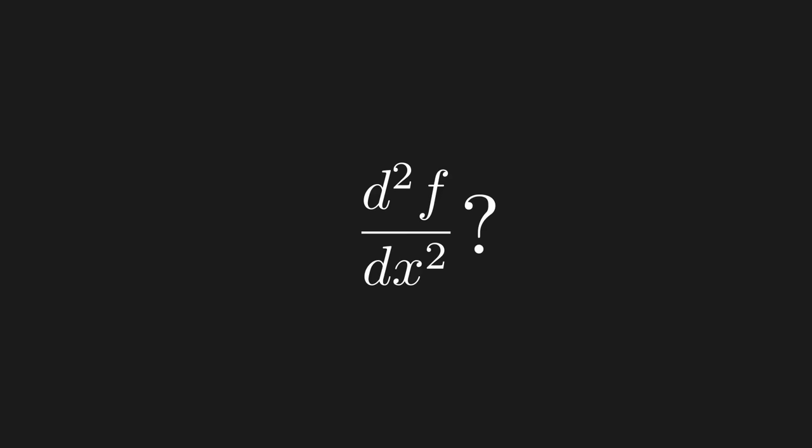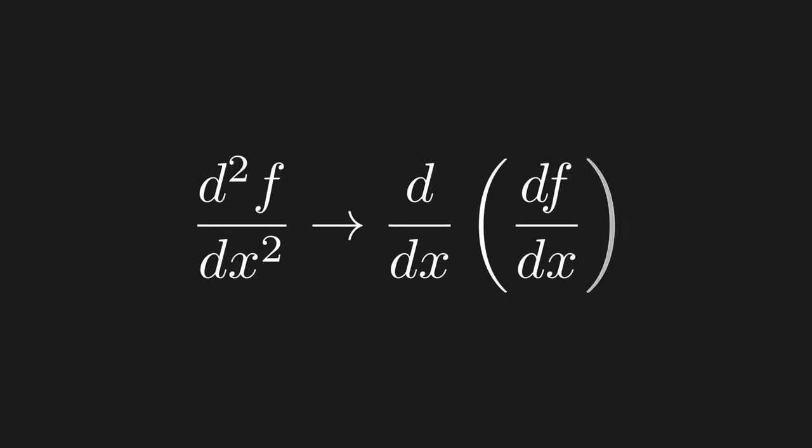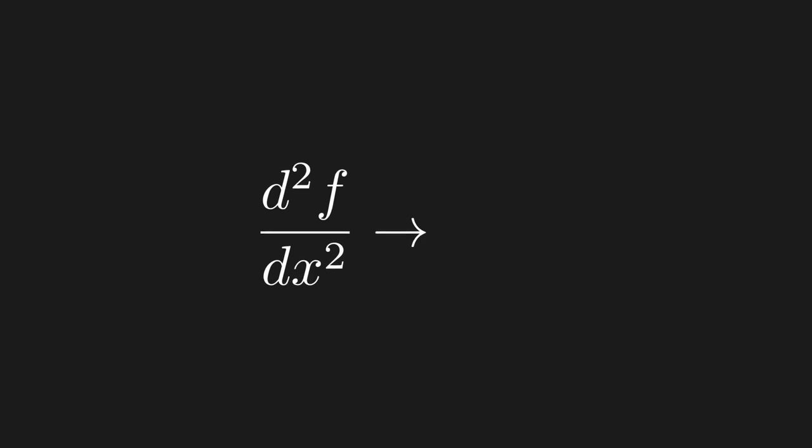So what about the second derivative? What does it tell us? Usually we're taught that it tells us how the first derivative changes when we change the input by a tiny amount — but this understanding kind of sucks. I don't want to know what the second derivative tells me about the first derivative; I want to know what it tells me about the function itself.